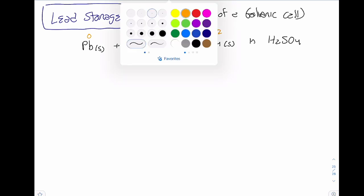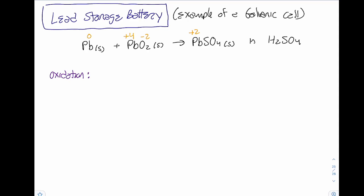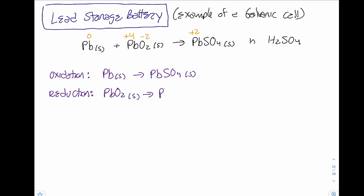For the oxidation step, if something is being oxidized it loses electrons and its oxidation number gets bigger. Lead solid goes to lead sulfate — Pb(s) → PbSO₄. It's not balanced yet because there's no sulfur on the left, but we'll get that sulfur from sulfuric acid. For reduction, the oxidation number gets smaller, so PbO₂ goes to lead sulfate.